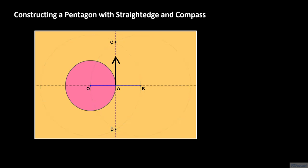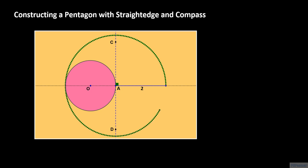Line CD is the line through A that is perpendicular to the x-axis. Keeping segment OB as the radius for our compass, we construct a third circle of radius 2, this time centered at A. This circle should intersect line CD at two points, which we call points E and F.